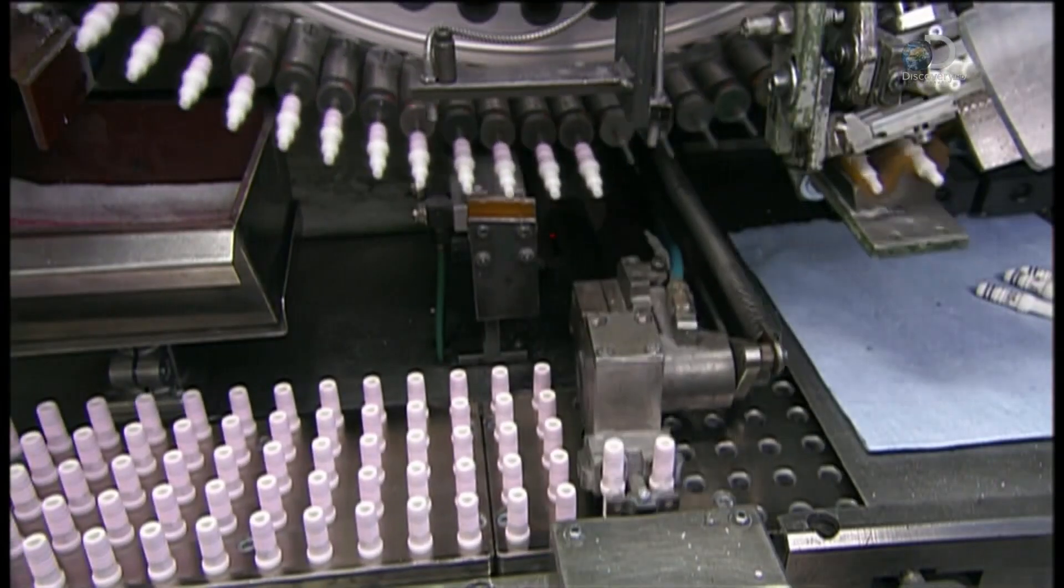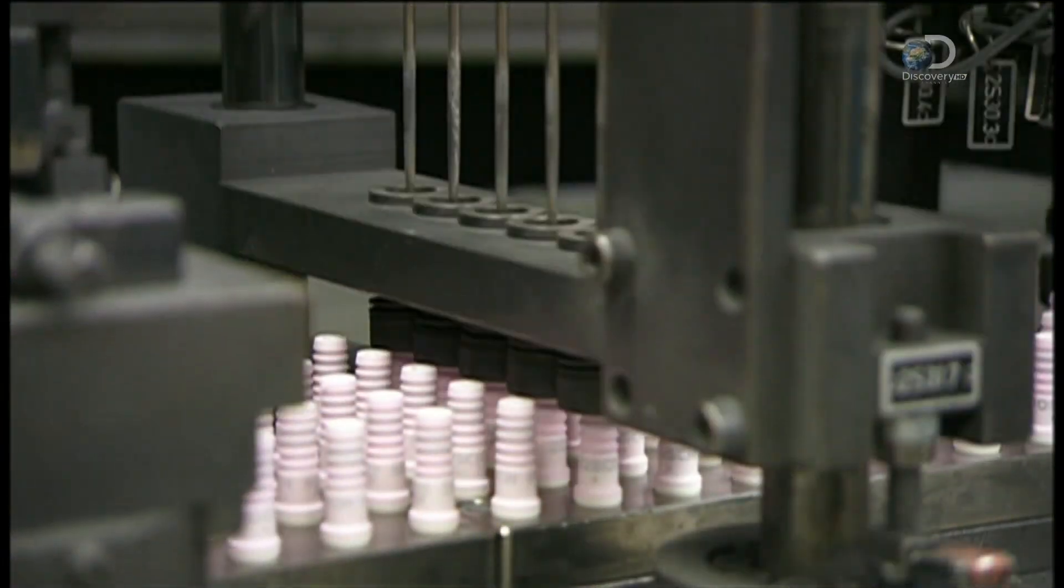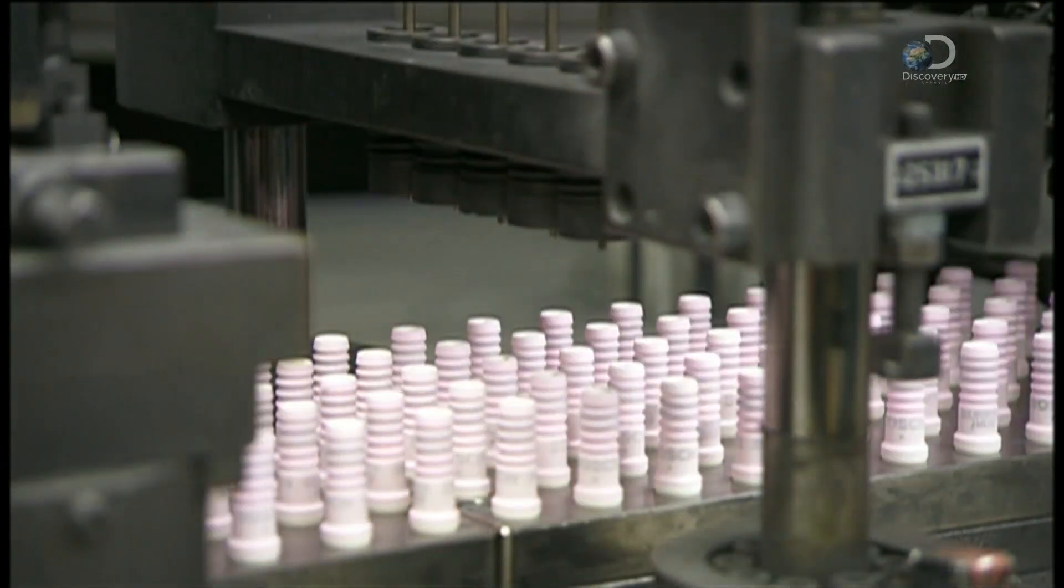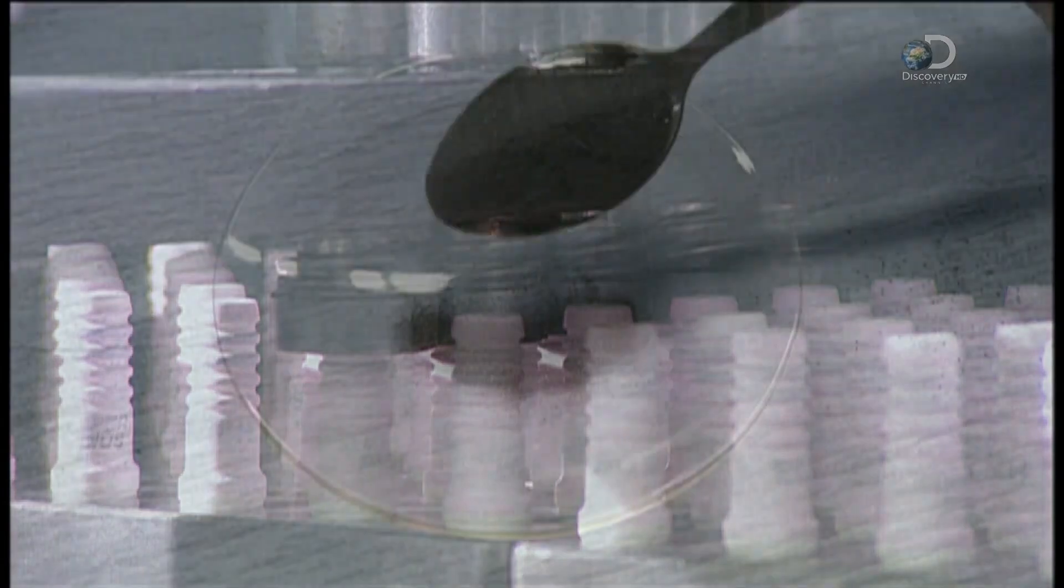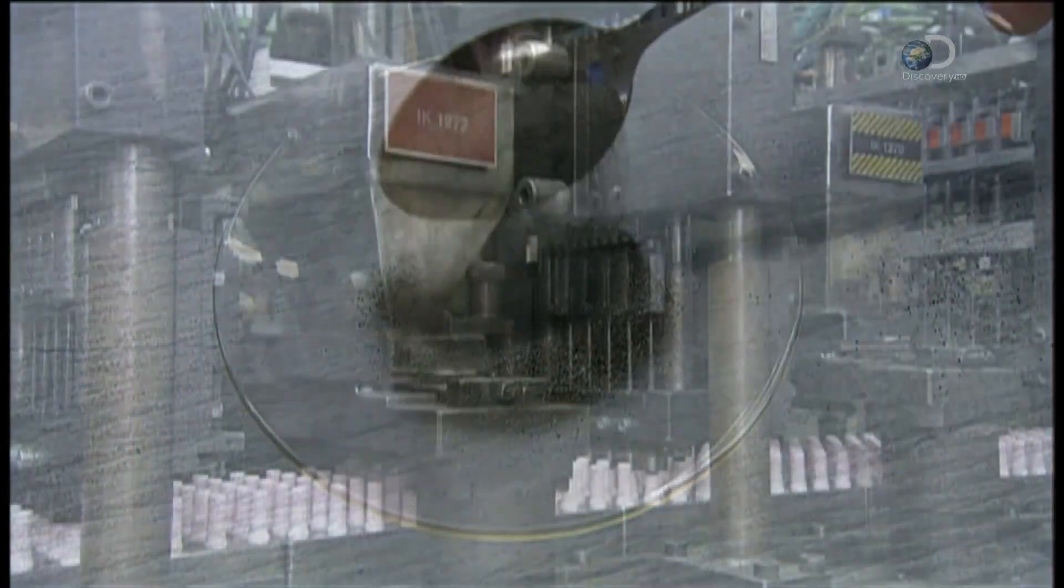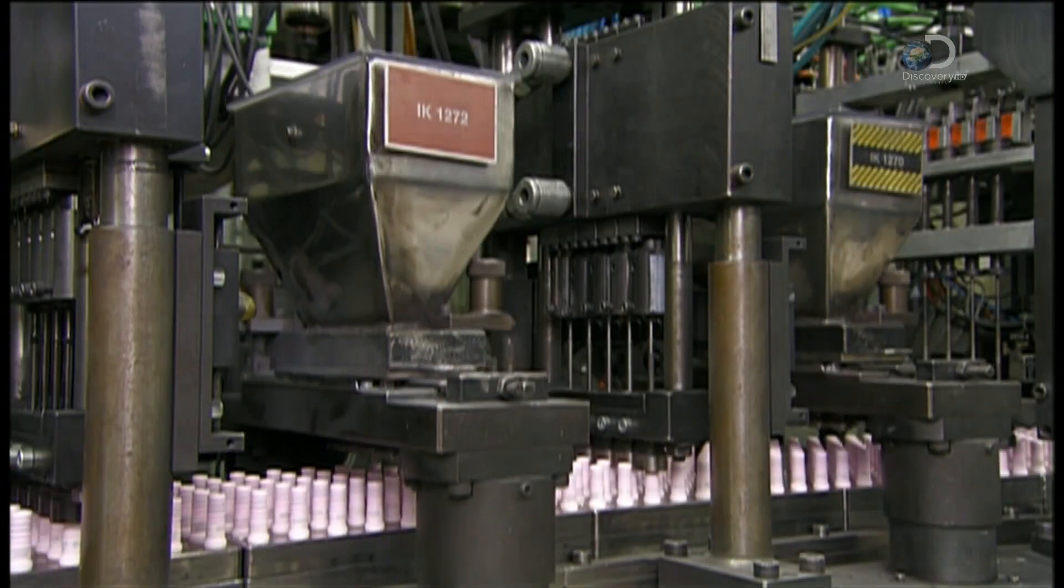They install center electrodes in the insulators, and powder funnels into them to fill the space around the electrodes. The powder is a mix of glass and metal. Automated prongs compress it in the insulators.